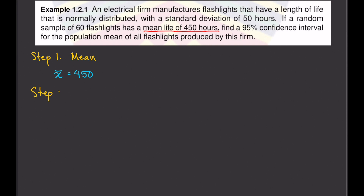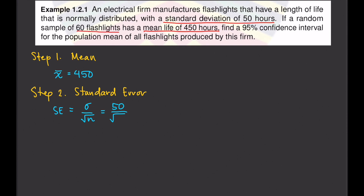Step number two is to find the standard error. The formula is SE = standard deviation over the square root of the sample size. Our standard deviation is 50 and n is 60, so that's 50 divided by the square root of 60, which gives us approximately 6.4550.